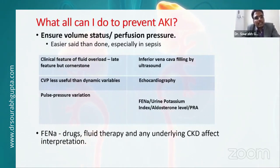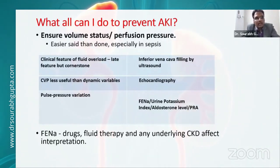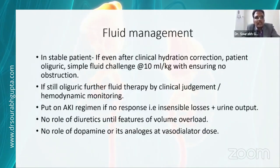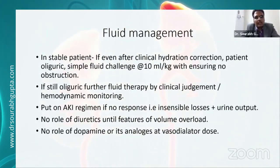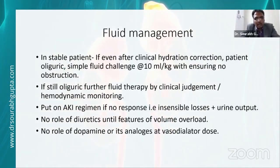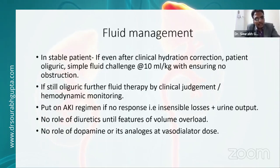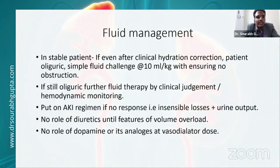FENa is helpful in differentiating pre-renal from renal AKI, but it is affected by drugs like diuretics, fluid therapy, and underlying CKD. In cases where diuretics have been given, fractional excretion of urea can be used instead. A fractional excretion of urea more than 35% suggests intrinsic renal AKI; less than 35% suggests pre-renal. If the patient is hemodynamically stable but still oliguric, one can try a fluid challenge. Review records before giving fluid challenge to avoid fluid overload. If oliguria persists, restrict fluids to insensible losses plus urine output.